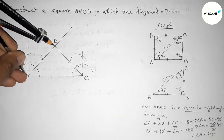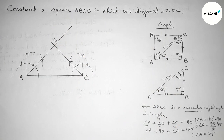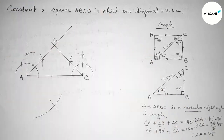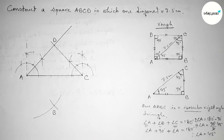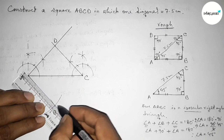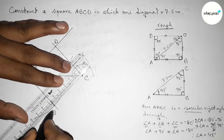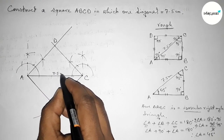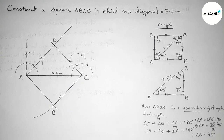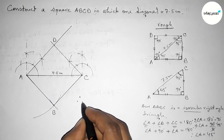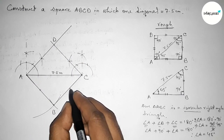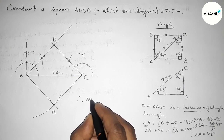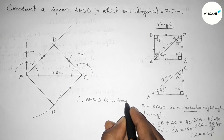Now taking the length AD with the compass — we know the length of each side is equal. Putting the compass at the intersection and drawing an arc, then with the same length cutting from C to find point B. Joining A to B, then B to C, we now have square ABCD. All four sides AB, BC, CD, and DA are equal, so ABCD is a square.